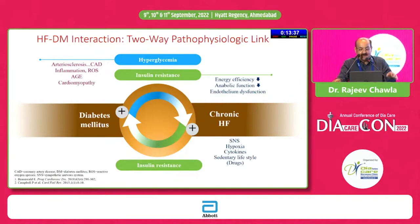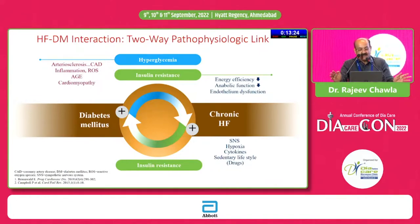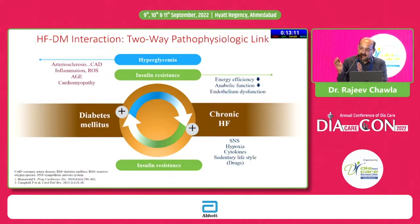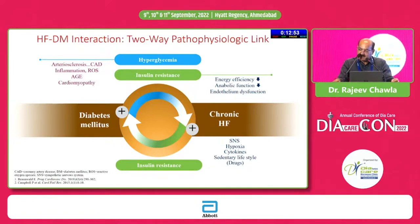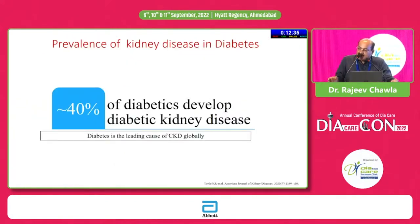Heart failure and type 2 diabetes have a very dynamic, bidirectional two-way physiological link. Persistent hyperglycemia with insulin resistance leads to rampant atherosclerosis and CVD, and with microangiopathy there is cardiomyopathy — these days labeled as preserved heart failure. Both atherosclerotic and preserved heart failure ultimately lead to endothelial dysfunction, reduction in energy efficiency, worsening of chronic heart failure, sympathetic nervous system stimulation, hypoxia, cytokines, and severe insulin resistance. So type 2 diabetes increases prevalence of chronic heart failure, and chronic heart failure in turn increases prevalence of type 2 diabetes.